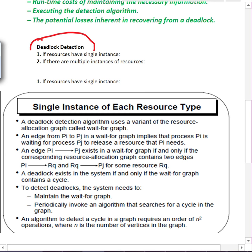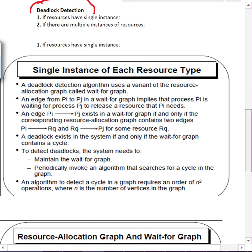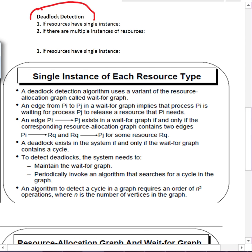Deadlock detection, like in the banker's algorithm, depends on whether we have a single instance per resource or multiple instances per resource. For a single instance per resource, we use a modified version of the resource allocation graph called a wait-for graph. An edge from process Pi to process Pj in the wait-for graph implies that Pi is waiting for Pj to release a resource that Pi needs.